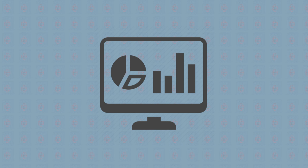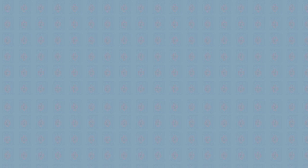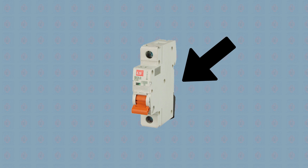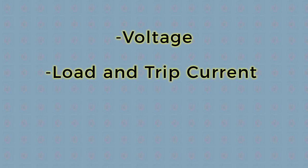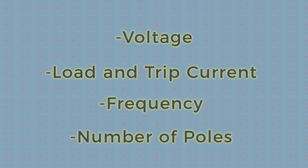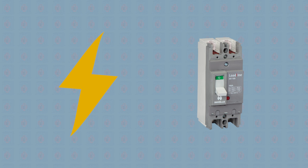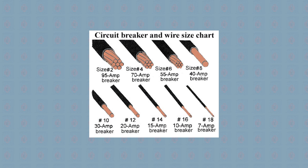Three: check the electrical specifications. You will need to find out a range of specs. If you're replacing an old breaker, you'll find all the info you need on the unit itself. Necessary information includes voltage load, trip current, frequency, and number of poles. When trying to determine amperage but you do not have an old circuit breaker for comparison, you can use the wire gauge to guide your decision.